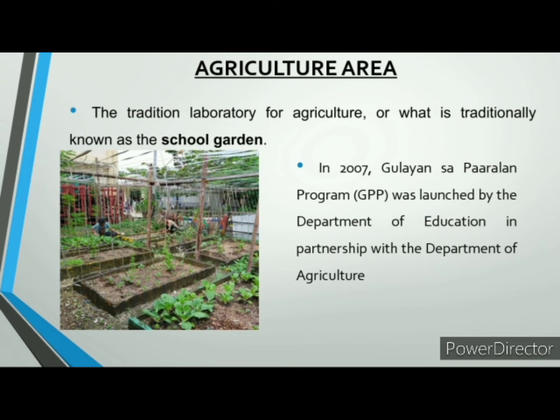In 2007, the Gulayan sa Paaralan program was launched by the Department of Education in partnership with the Department of Agriculture to promote the value of school gardening as a contribution to the feeding program and raise awareness to have locally grown vegetables and crops that will benefit the community.